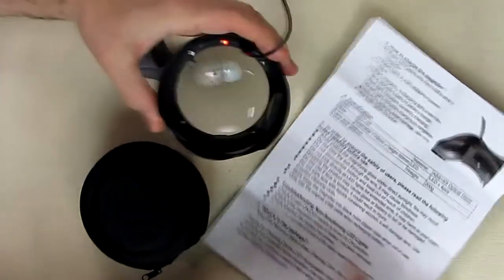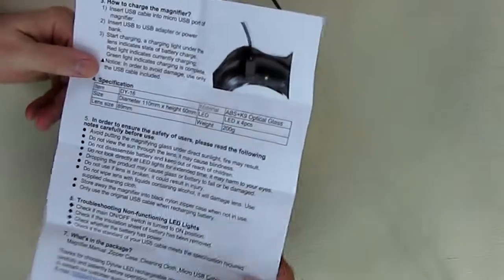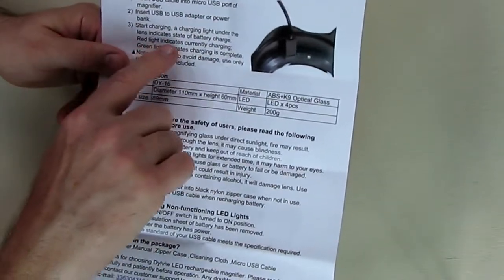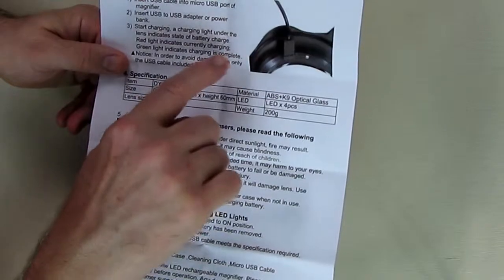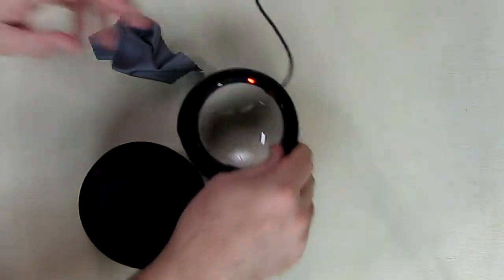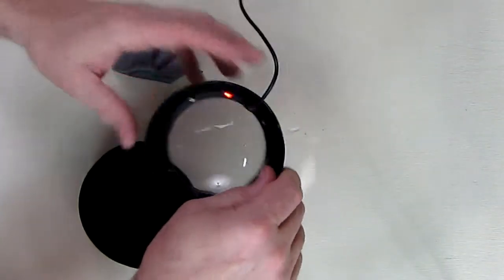So that indicator light, based on what the manual says, red light indicates currently charging, green light indicates charging is complete. So right now it's charging and it's going to go to green when it's complete, and then you know it's fully charged and ready to use. Very simple.